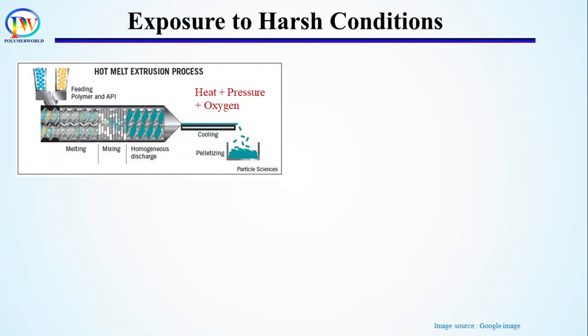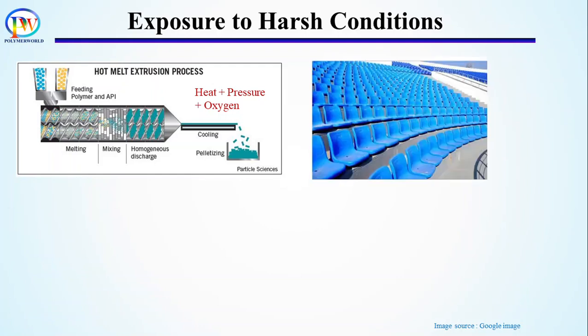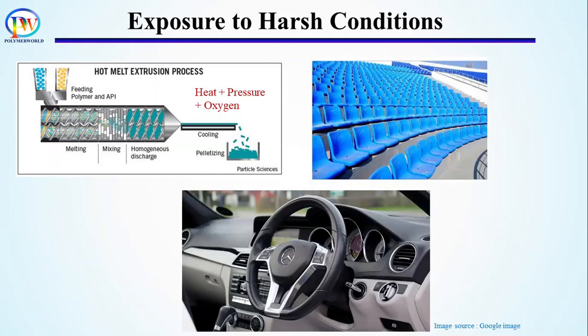Polymeric products also go through rough conditions even when they are being used for different applications. When products are used for outdoor applications, the product can be in direct sunlight which contains UV radiation and also generates high amounts of heat. Since both UV light and heat can cause degradation of the polymer chain, both of these factors must be taken into account.